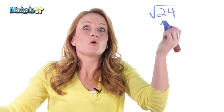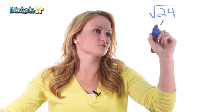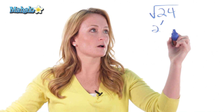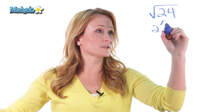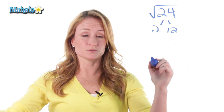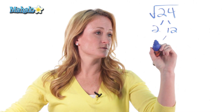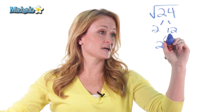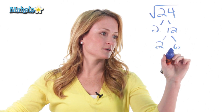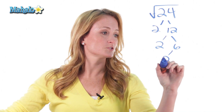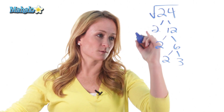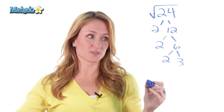Always start with 2 if you can, because it just makes your life easier. So out of 24, we would get 2 times 12. We can reduce 12 to 2 times 6, and we can break 6 down further into 2 times 3. Now it's broken down as small as possible.